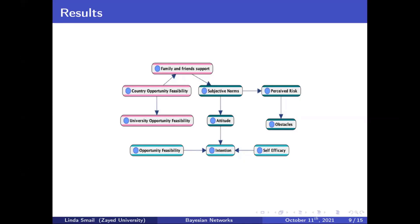Looking at the conditional probability table for the intention target node — which has three parents — we noticed a 60.9% chance of high intention when attitude was high (above 4), self-efficacy was moderate (between 2.6 and 3.5), and opportunity feasibility was high (above 3.5). This is very useful because now we know exactly what variables to work on to improve entrepreneurial intention.